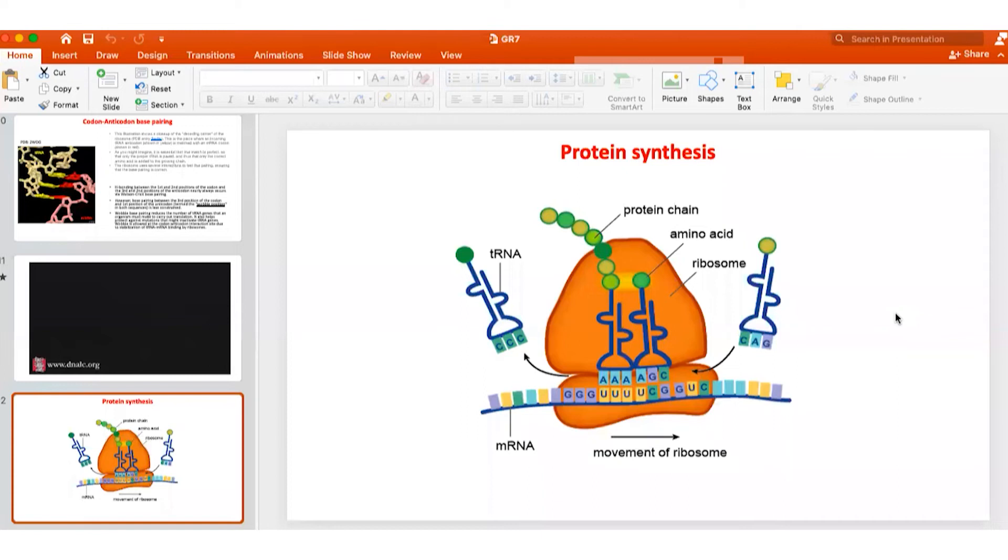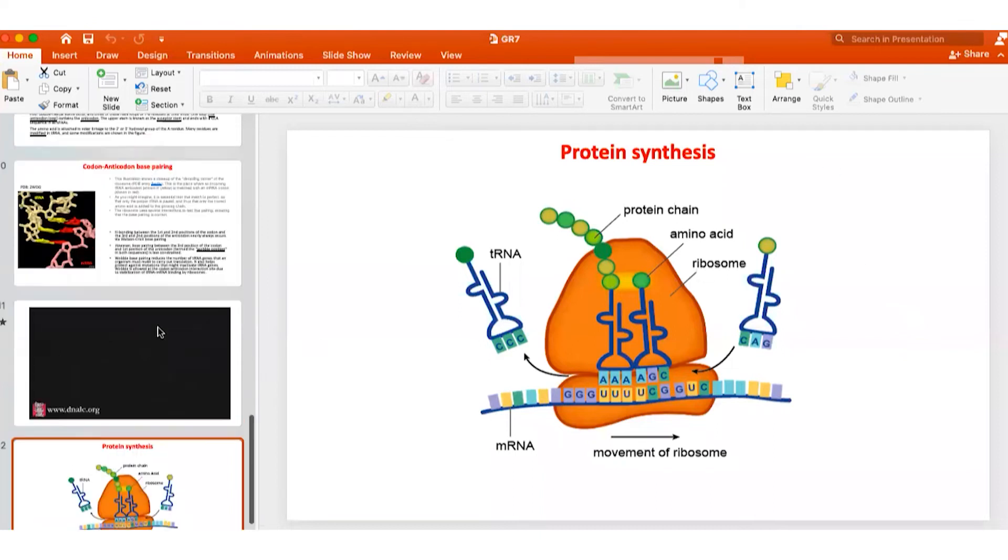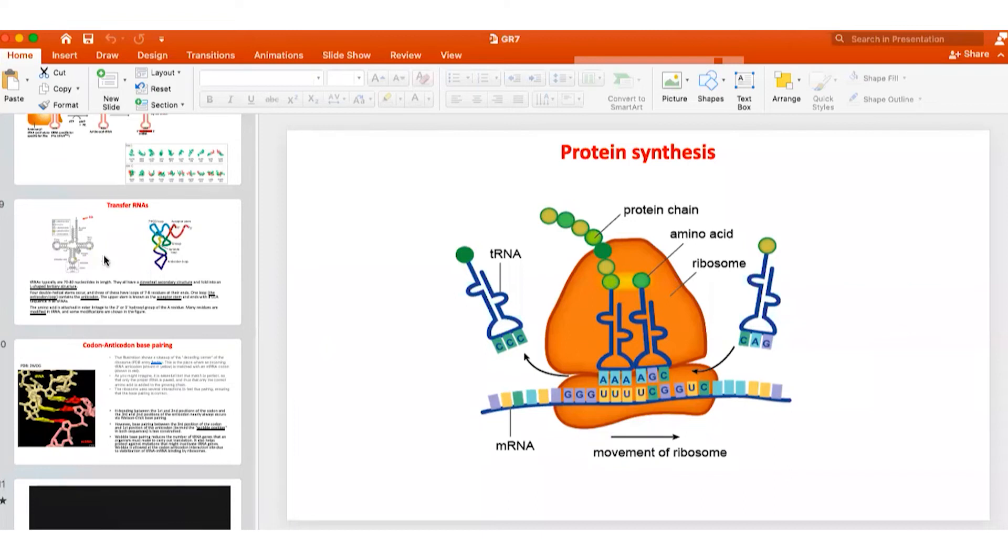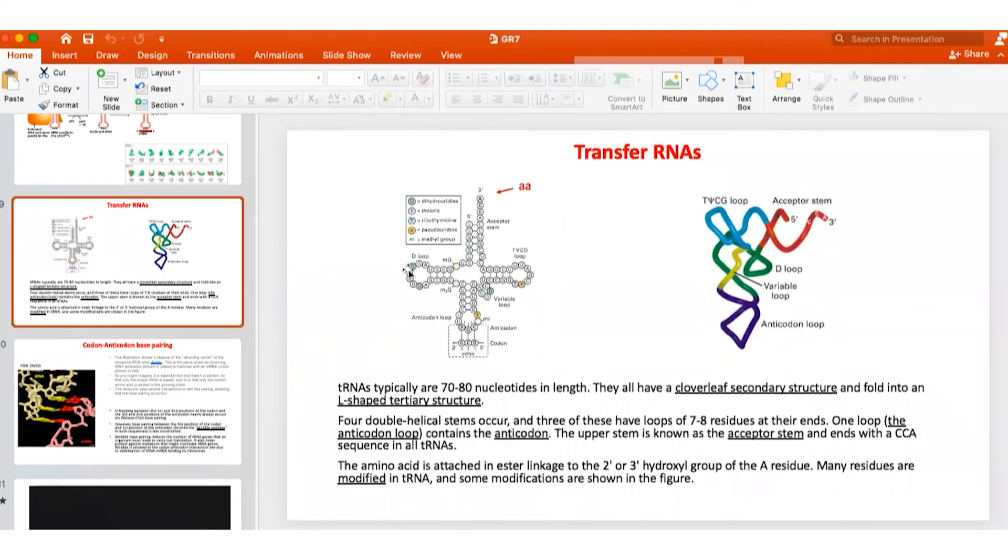A student asks about the extra sequences around the cloverleaf of the tRNA and their significance. The instructor clarifies that they're not really "extra." Using a shark analogy, if only the teeth are important, these sequences make sure that the teeth of the shark are sharp and pointed in the right direction. They are very important in the folded state of this structure, and there is variability.